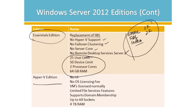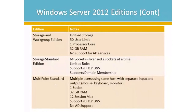The Hyper-V edition has no user interface and no licensing fee for the operating system itself — you license the virtual machines individually. It has limited file services, enough to host ISO files needed for Hyper-V, and can join a domain. You get 64 sockets and 4 terabytes of RAM. There are also two Storage editions: Workgroup and Standard. The Workgroup edition limits user connections and has no Active Directory; Standard edition supports domain membership and is licensed per two sockets.